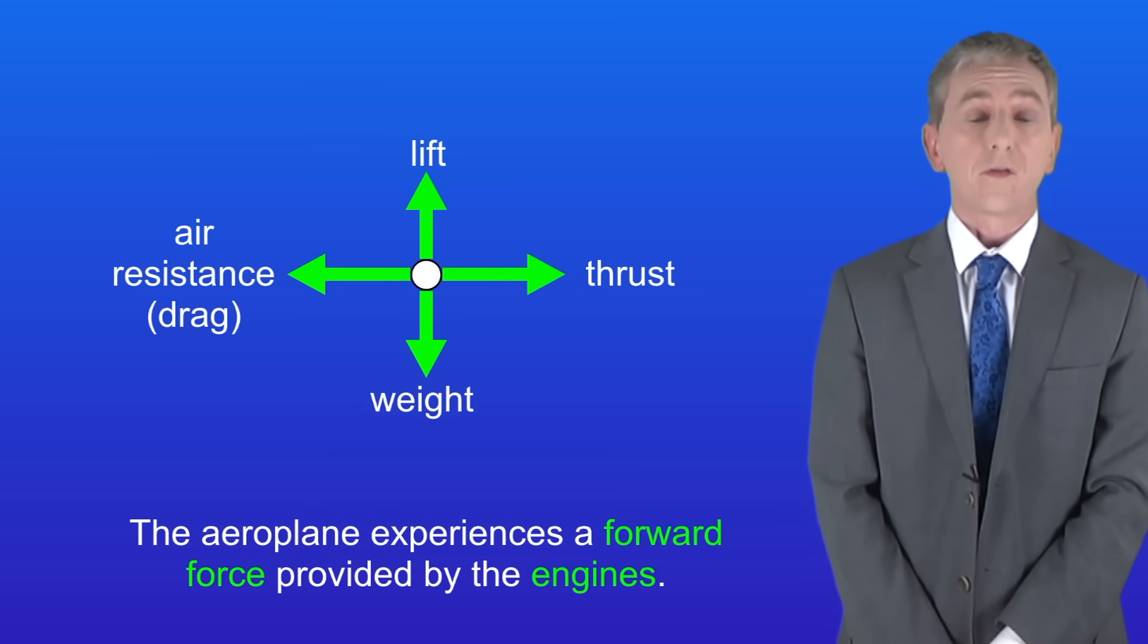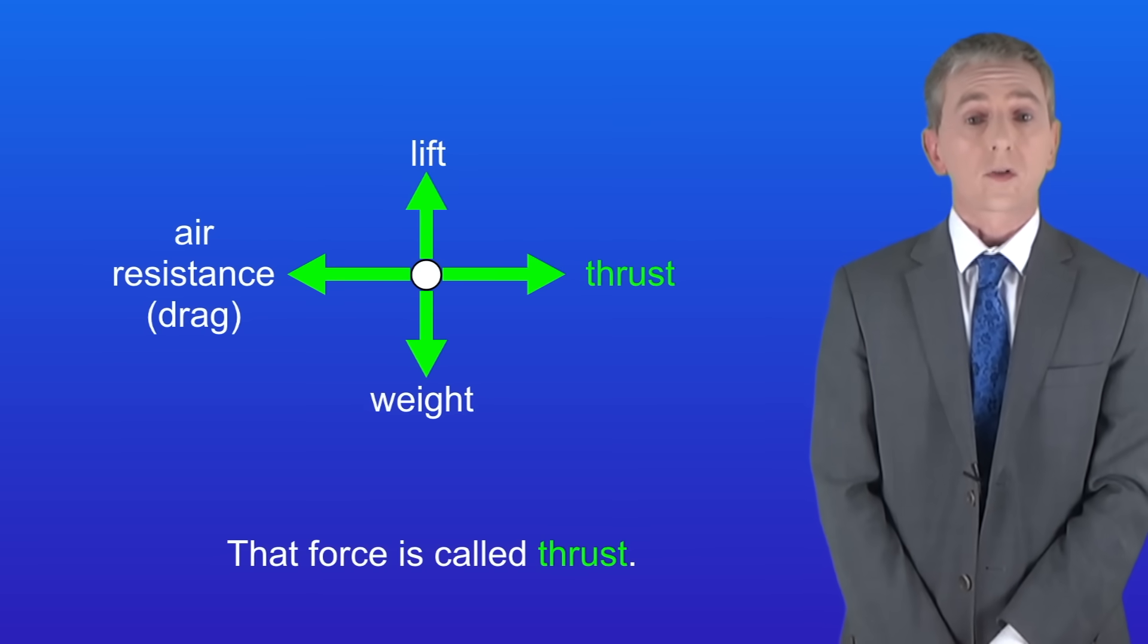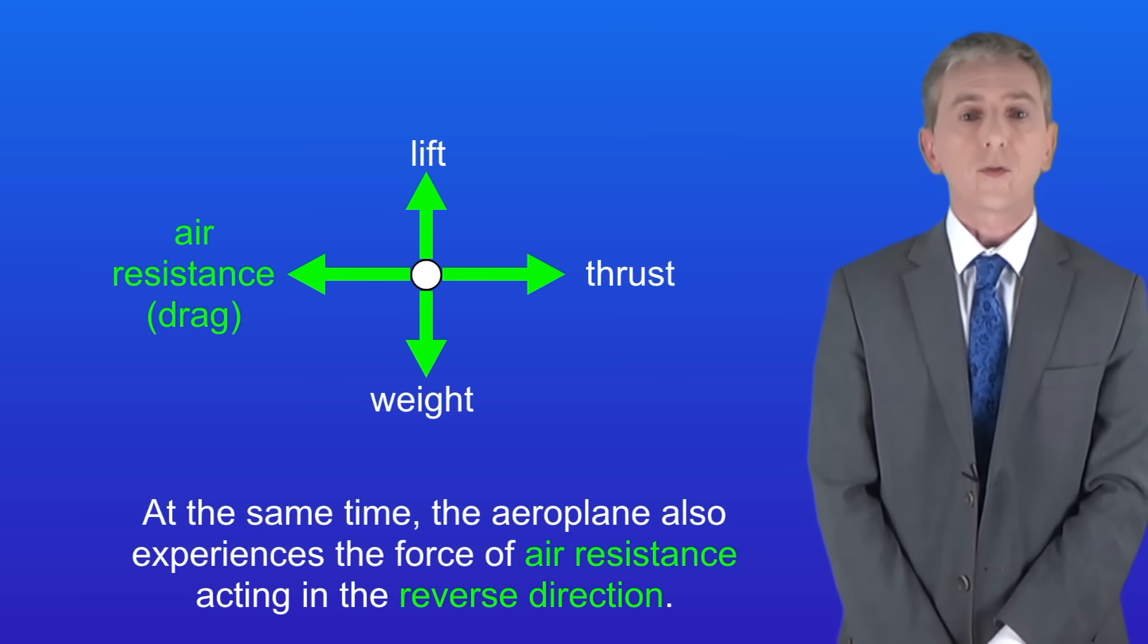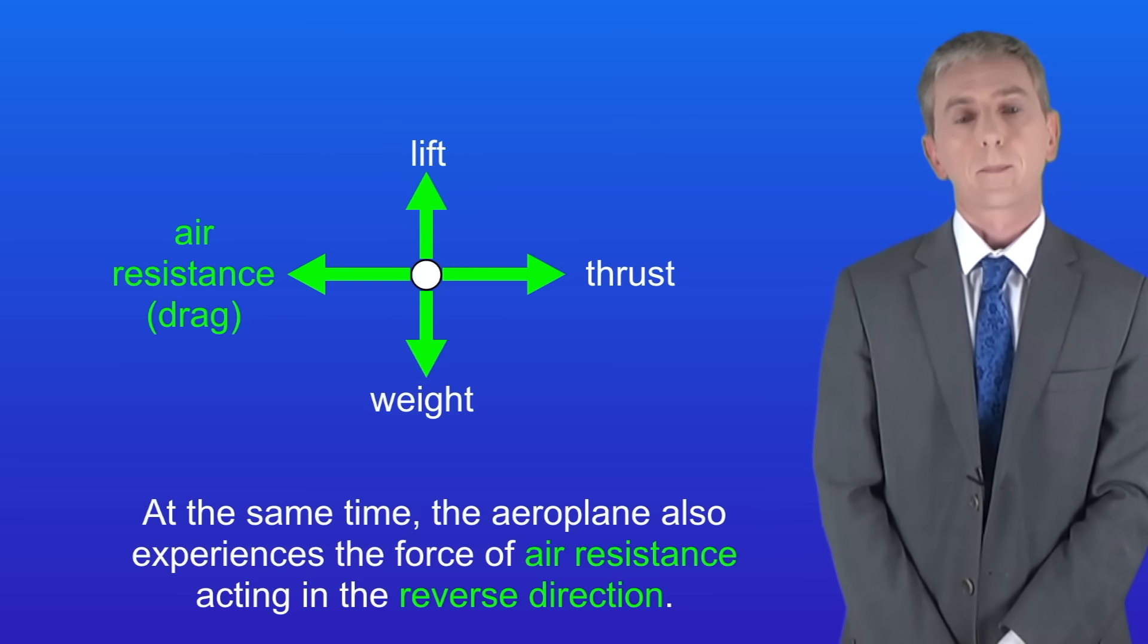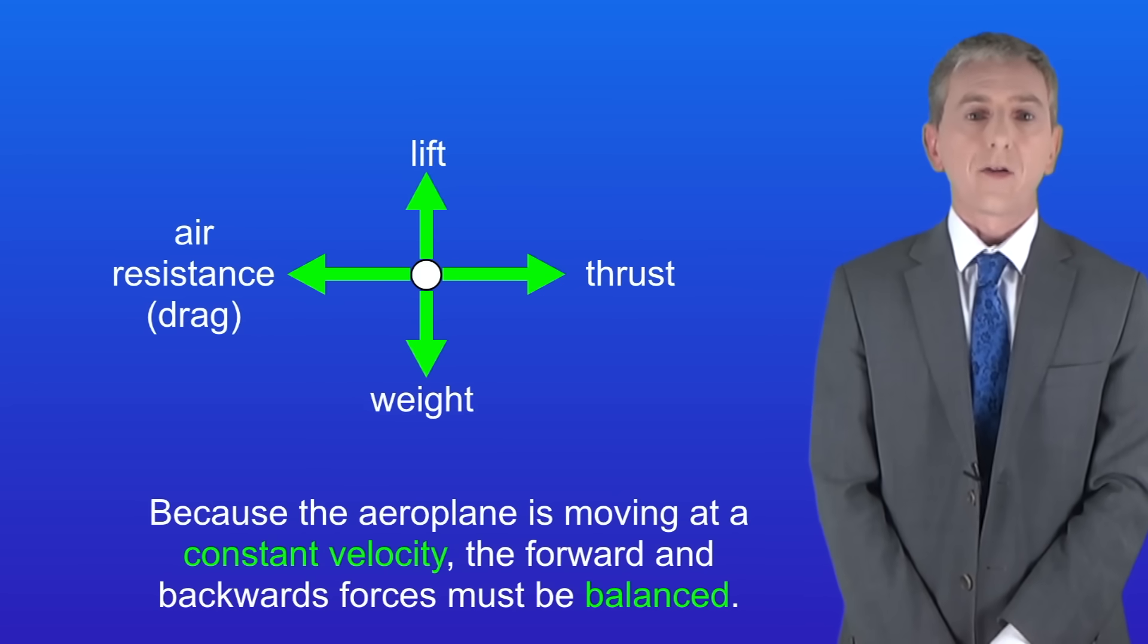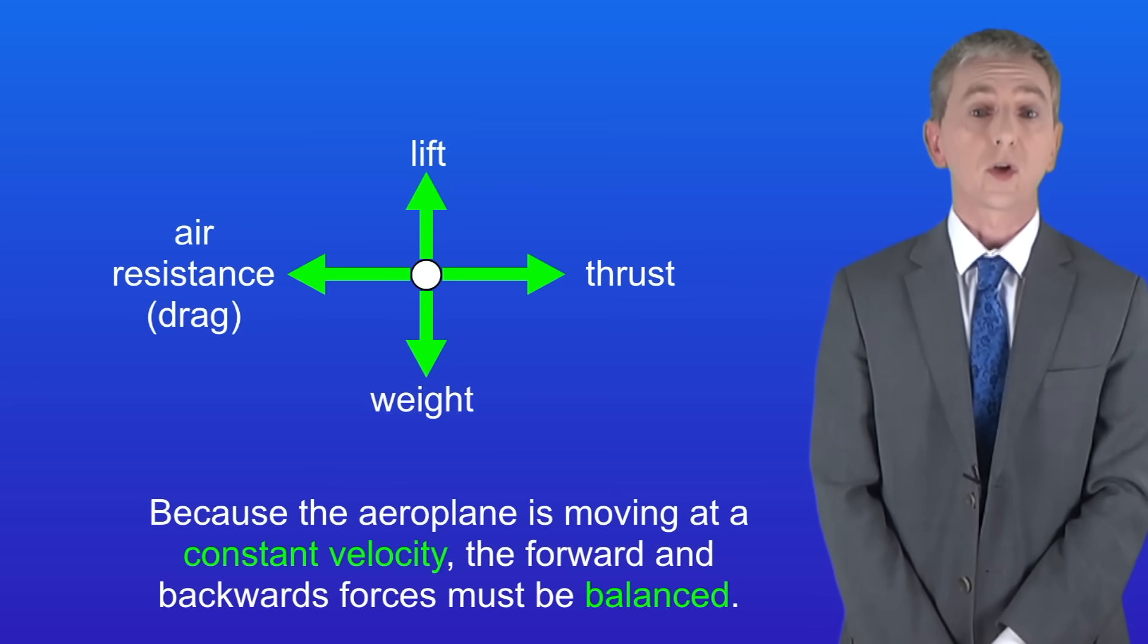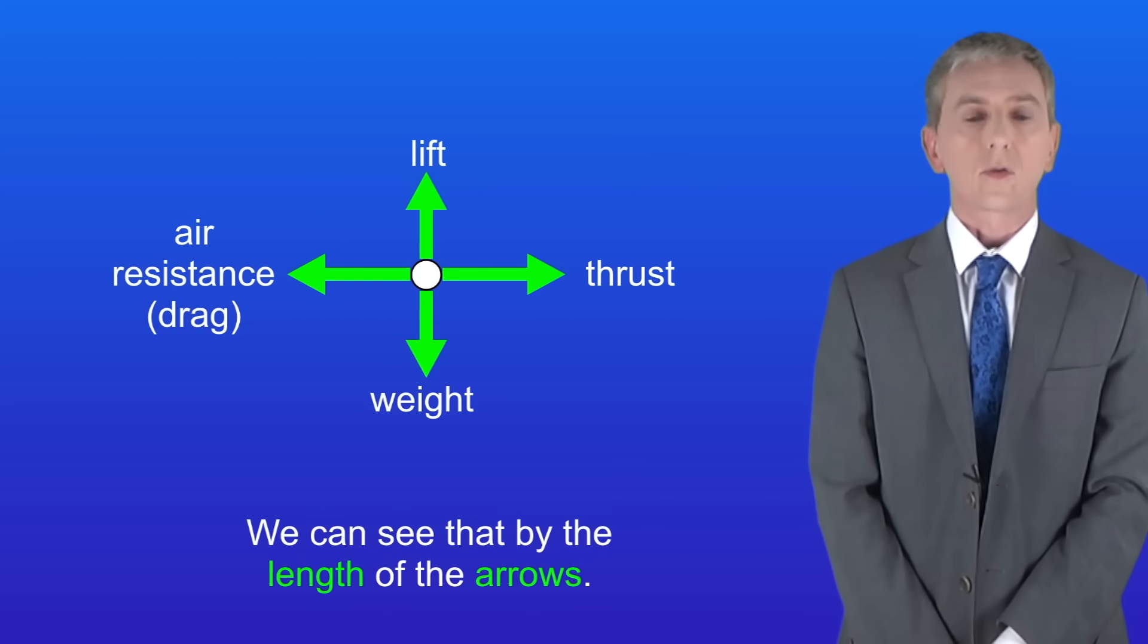Now the aeroplane experiences a forward force provided by the engines, and that force is called thrust, and I'm showing that here. At the same time, the aeroplane also experiences the force of air resistance or drag acting in the reverse direction. Now because the aeroplane is moving at a constant velocity, the forward and backward forces must be balanced, and we can see that by the length of the arrows.